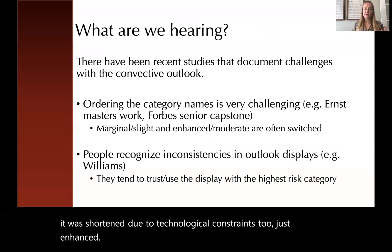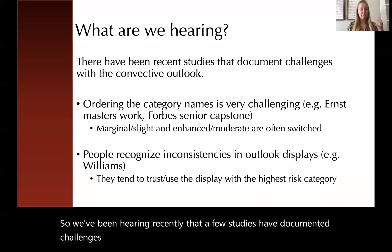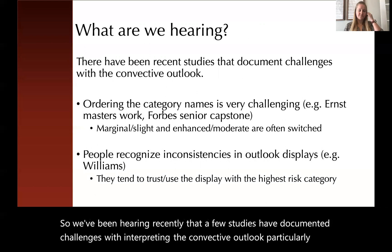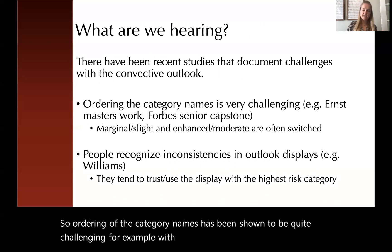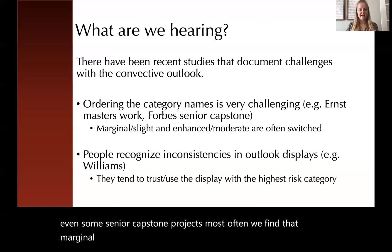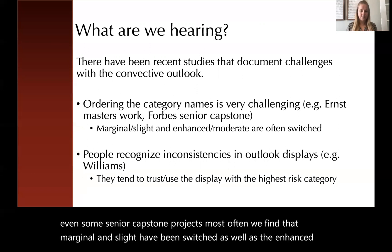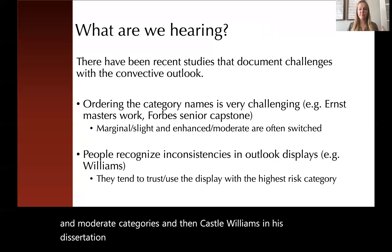We've been hearing recently that a few studies have documented challenges with interpreting the convective outlook, particularly the categorical scale. The ordering of the category names has been shown to be quite challenging — for example, in Sean Ernst's master's work and even some senior capstone projects. Most often we find that marginal and slight have been switched, as well as the enhanced and moderate categories. Castle Williams, in his dissertation work, has shown that people do recognize inconsistencies in these displays.